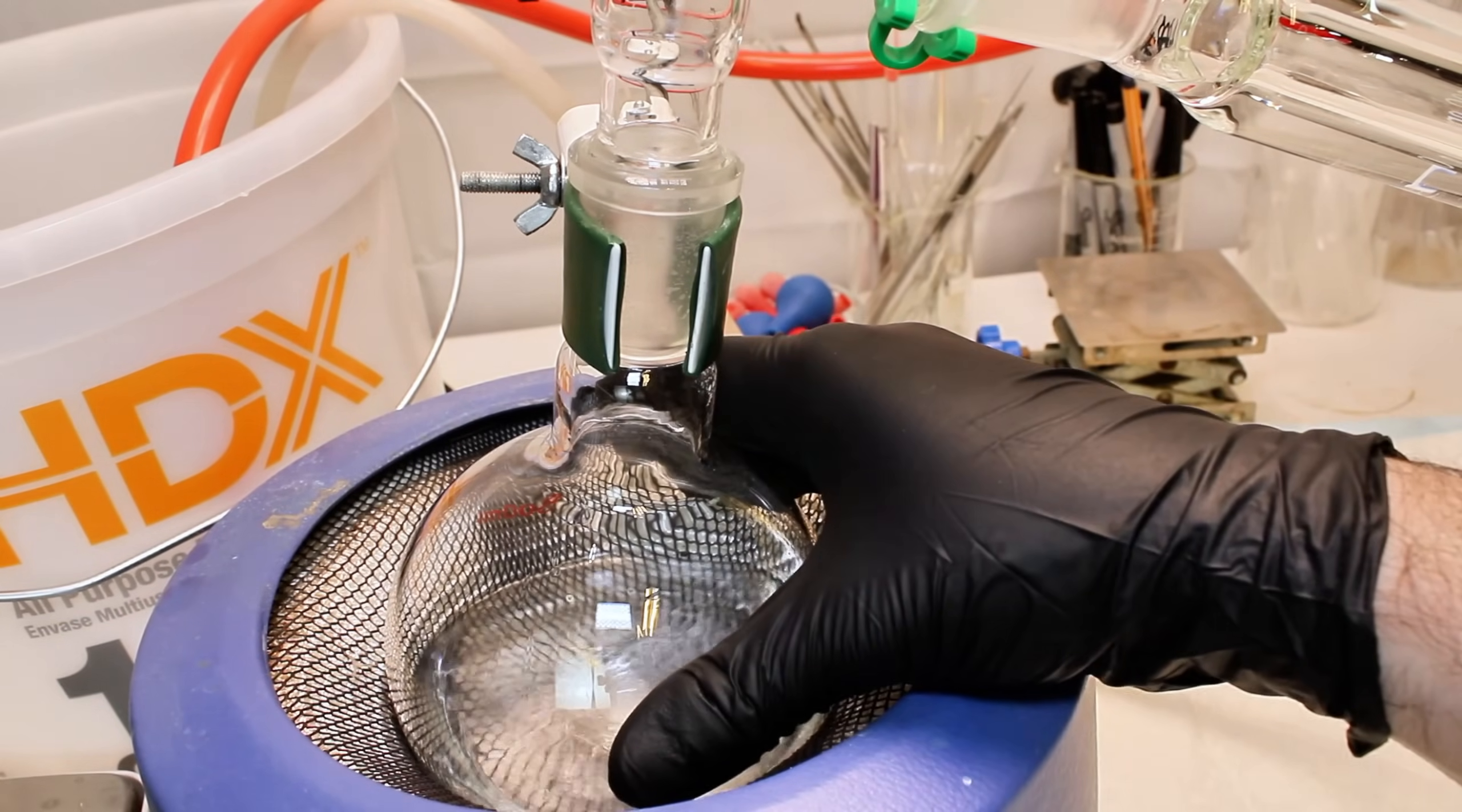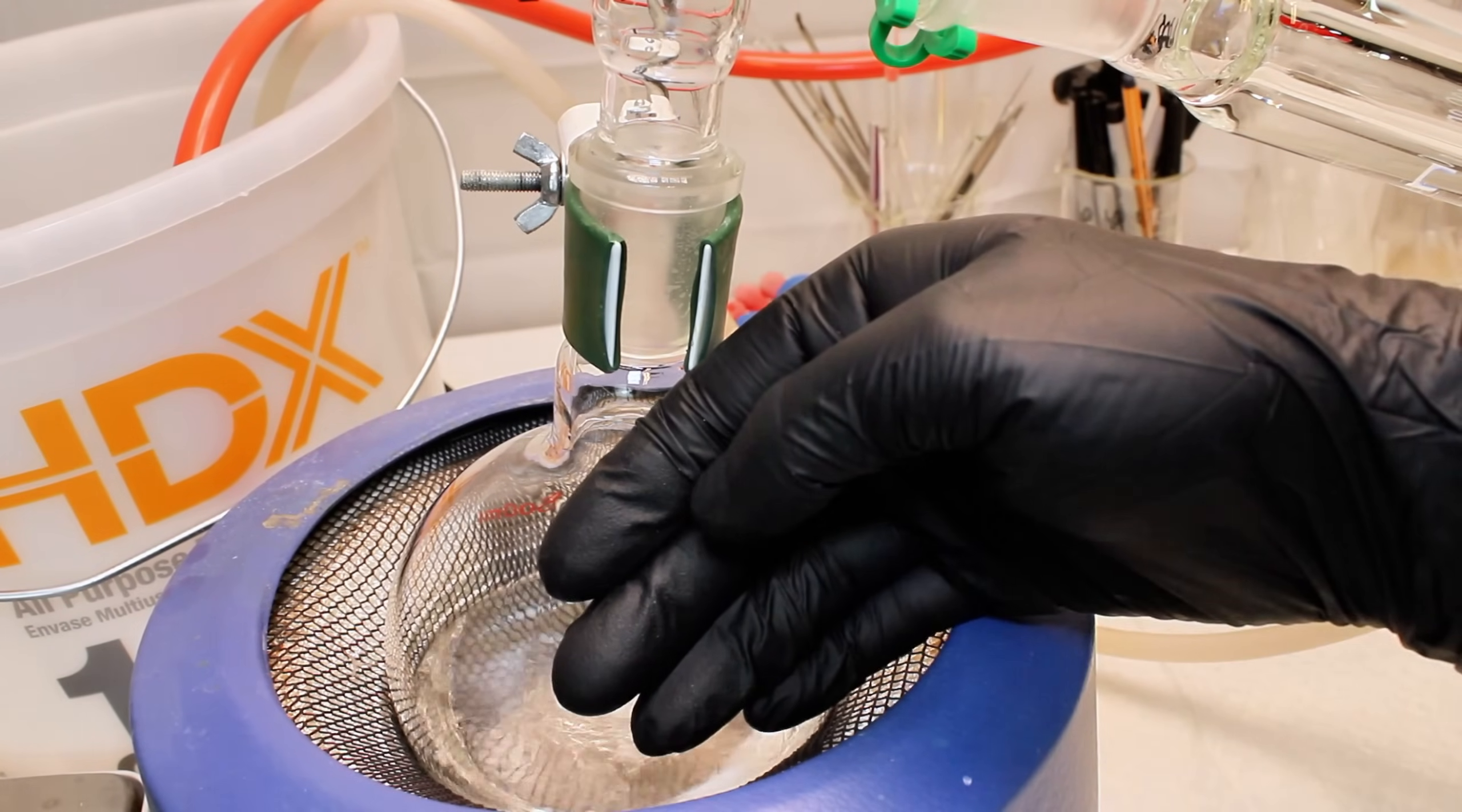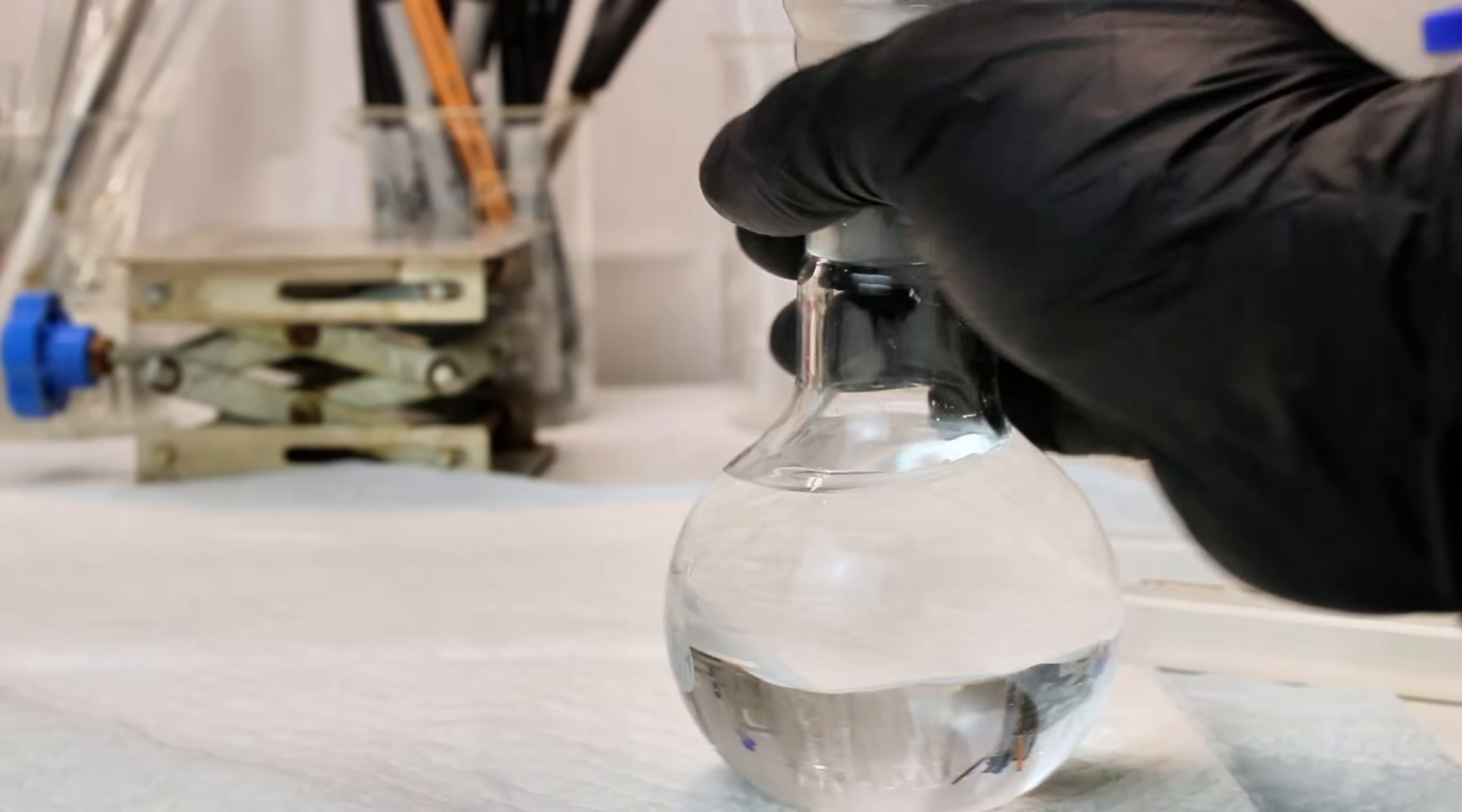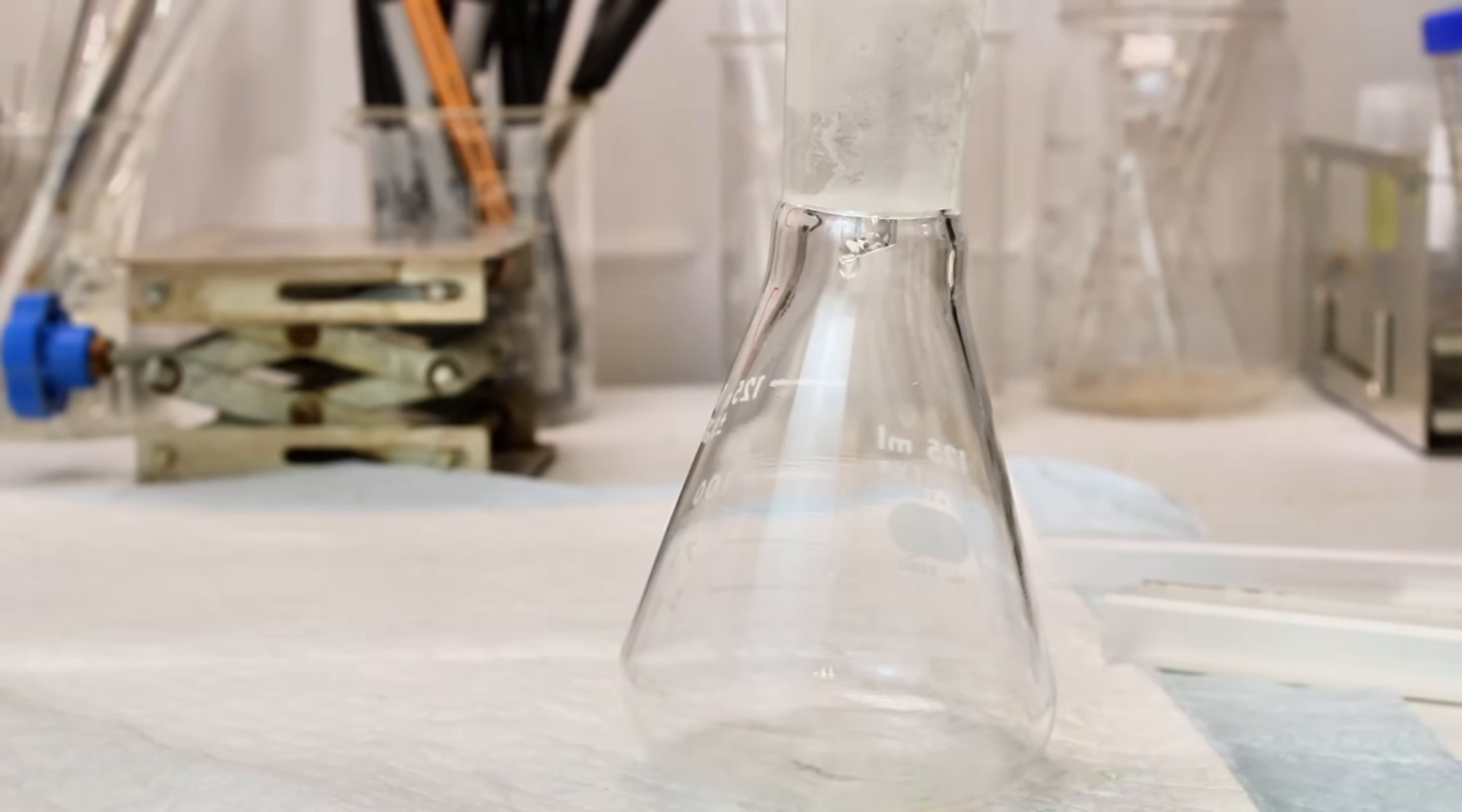This distillation is conducted at such a low temperature that you can easily touch any part of the apparatus, which is kind of weird to me. I collect everything below 38 degrees celsius, and then switch out my collection flask and collect everything between 38 and 77 degrees celsius, which should be a mixture of ethanol and ether.